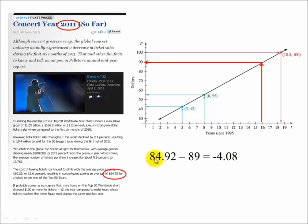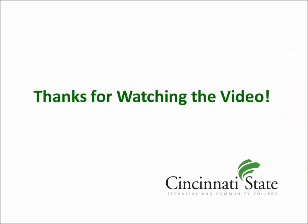Now if we take the actual data point, $84.92, and we subtract the predicted $89, we get negative $4.08. Now what that tells us is the model overestimated by $4.08. Thanks for watching.